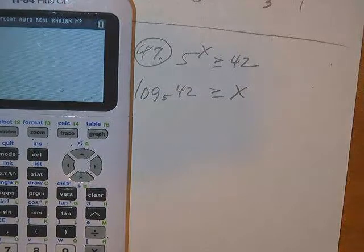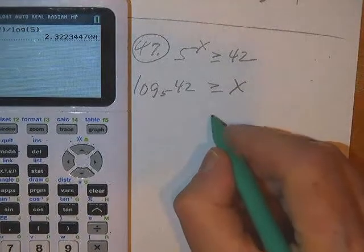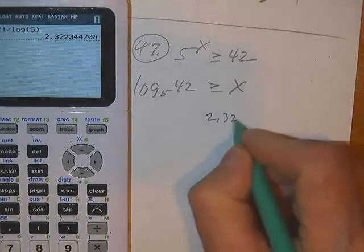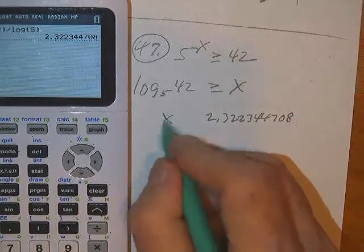So let's do log 42 divided by log 5. Five, there's my number: 2.322344708 and x.